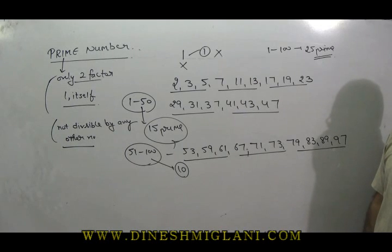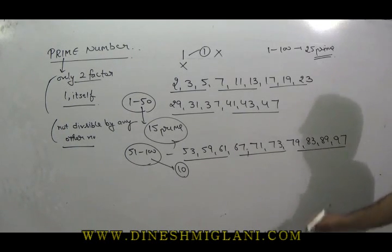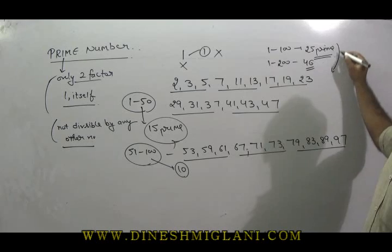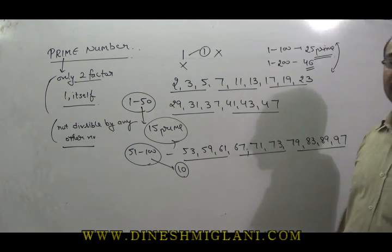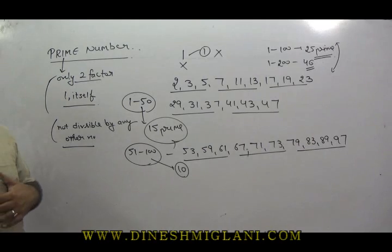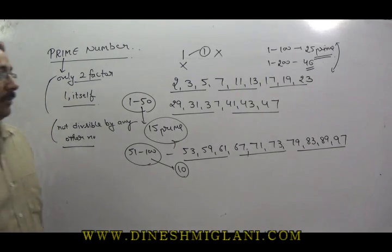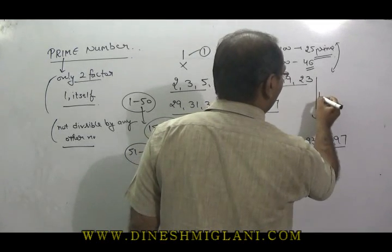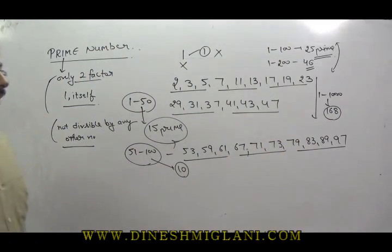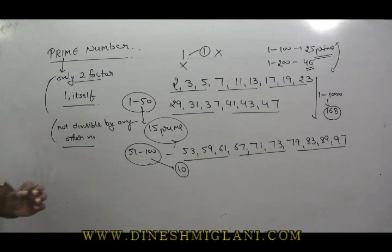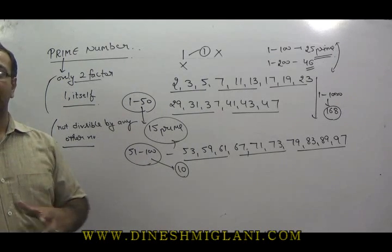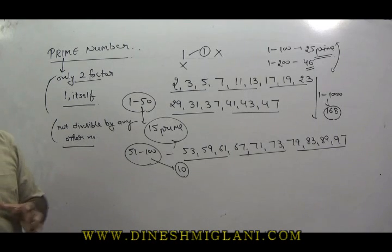Although we don't have any standard way to count prime numbers — you have to take them one by one. From 1 to 200, there are 46 prime numbers — you have to remember that. Generally this question has been asked in different competitive exams. From 1 to 100 there are 25 prime numbers, from 1 to 200 there are 46 prime numbers, and from 1 to 1000 there are 168 prime numbers.